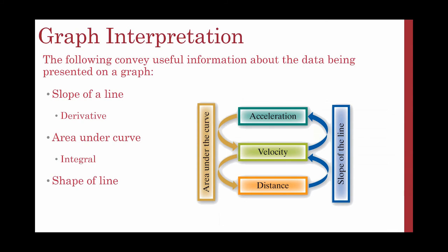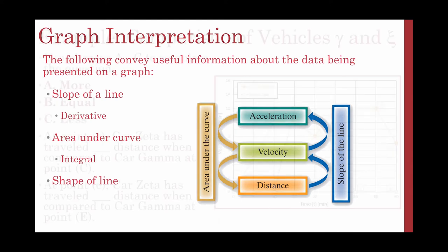How are acceleration, velocity, and distance related? If you have an acceleration graph, the area under the curve is the velocity. If you have a velocity graph, the area under the graph is distance. If you have a distance graph, the slope of your line is your velocity. If you have a velocity graph, the slope of your line is your acceleration.